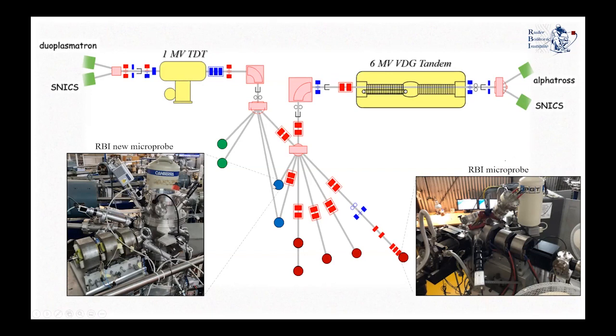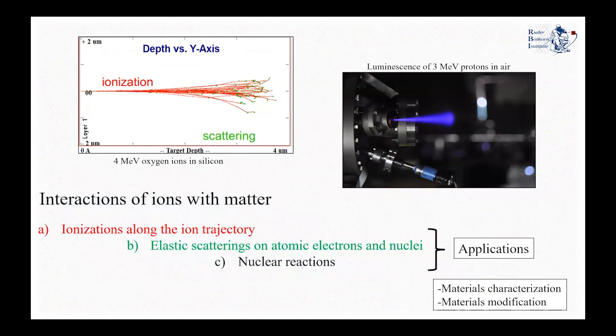Starting from the very basics: when you have an ion beam — a beam of MeV ions — and they interact with matter, we can categorize the interactions in three main categories. The most probable phenomena will cause ionizations inside the material along the ion trajectory. A little bit less probable are elastic scatterings on atomic electrons and the nuclei of the target material, and the least probable interactions are nuclear reactions.